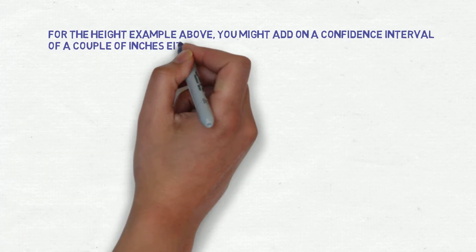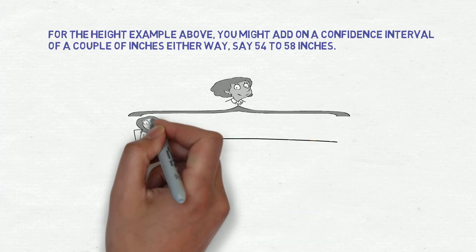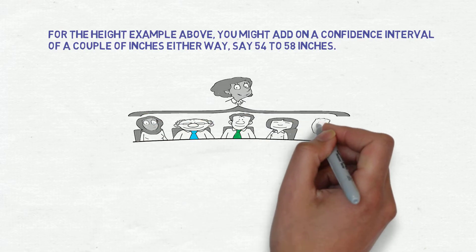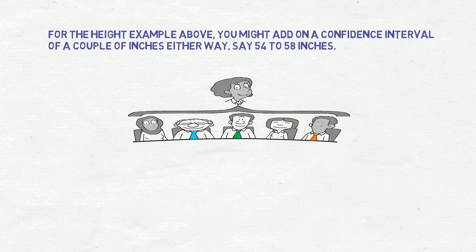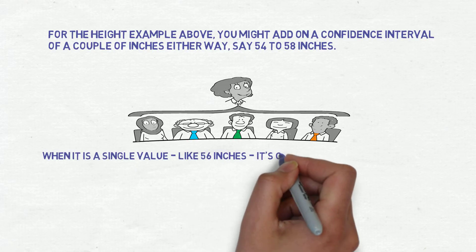Let's take an example for interval estimates. From the estimation example, you might add a confidence interval of a couple of inches either way. Say, it can be 54 to 58 inches. This is called an interval estimate because it has a confidence interval.